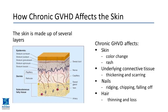Other epidermal tissue organs that can be affected include the nails — patients may experience nail breakage, the nail bed lifting off, or ridging. Sometimes it's due to chemotherapy, but when there are other signs of chronic GVHD, the donor cells are typically causing those nail changes. Graft-versus-host disease can also affect hair growth, as donor cells attack hair follicles, causing areas of hair loss, or alopecia.